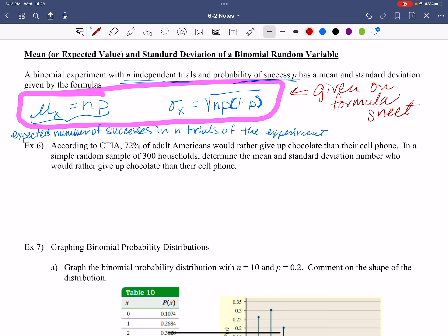So let's do this. According to CTIA, check it out, now we're back in the same boat again here with some chocolate. 72% of adult Americans would rather give up chocolate than their cell phone. In a random sample of 300 households, determine the mean and standard deviation who would rather give up chocolate than their cell phone.